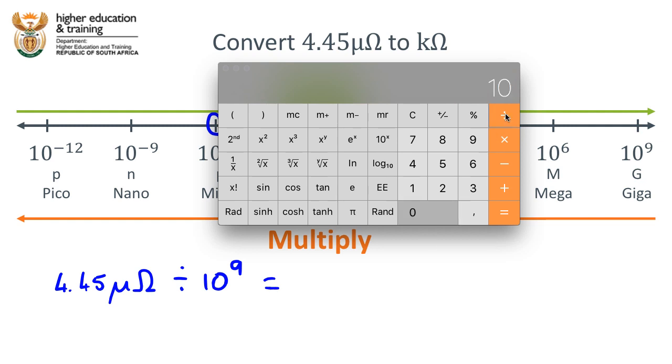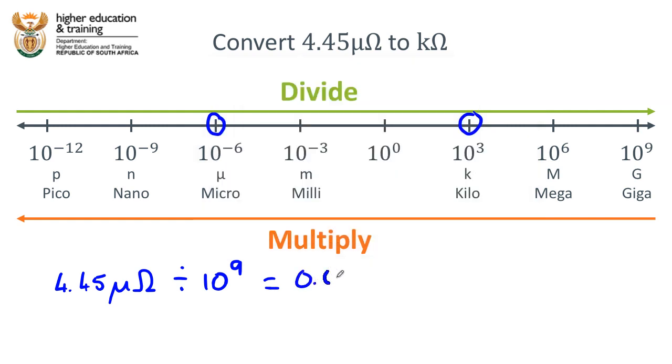So let's go divided by 10 to the power of 9. We've got a lot of zeros. Let's quickly count them: 1, 2, 3, 4, 5, 6, 7, 8, and then 4, 4, 5. So it's 0.000000445 and our new unit will be kilo ohms.